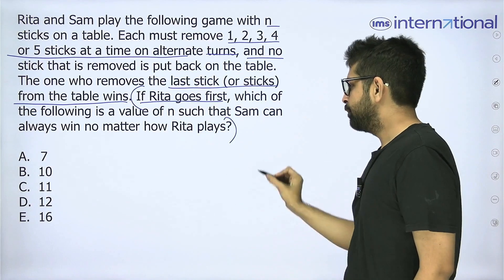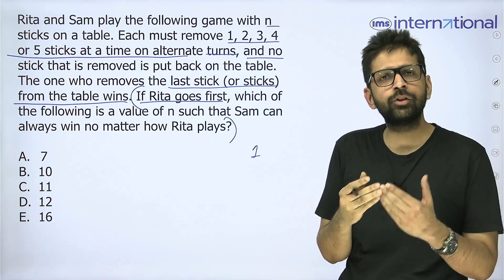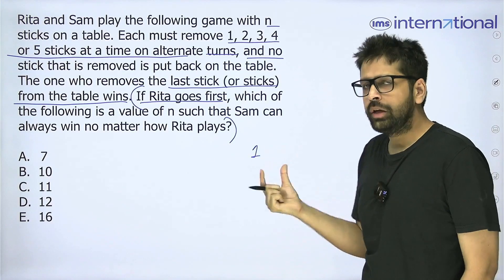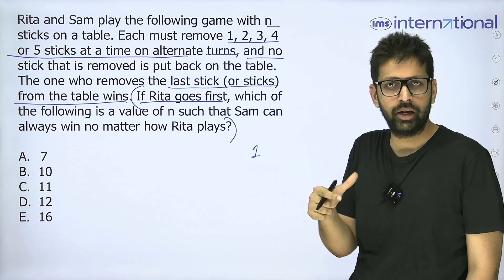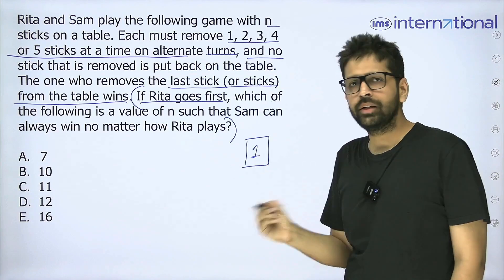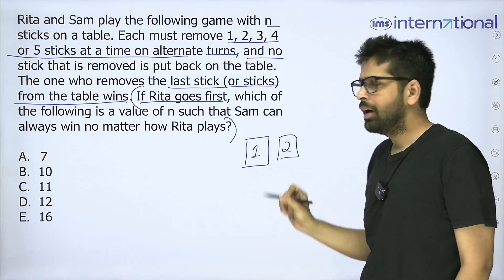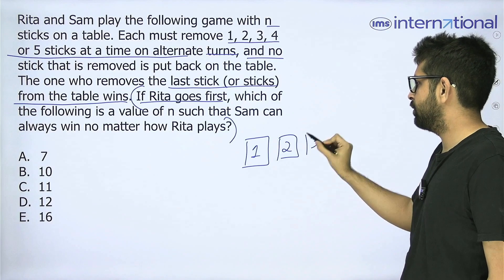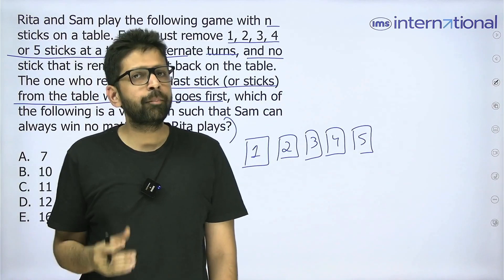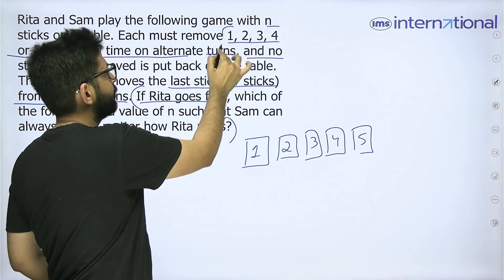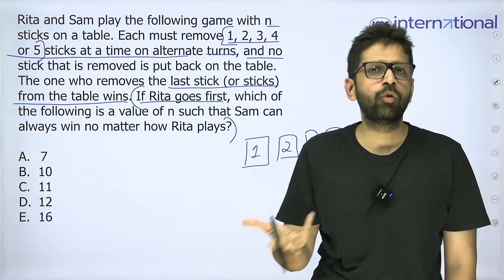Let's say there was just one stick on the table and it is your turn to pick. You are going to pick that and win the game because whoever picks the last stick wins. So if there were one, two, three, four, or five sticks on the table and it was your turn, you are going to win in all five cases — because you have the liberty of picking any number from one to five. If there are five sticks, you pick all five and win.